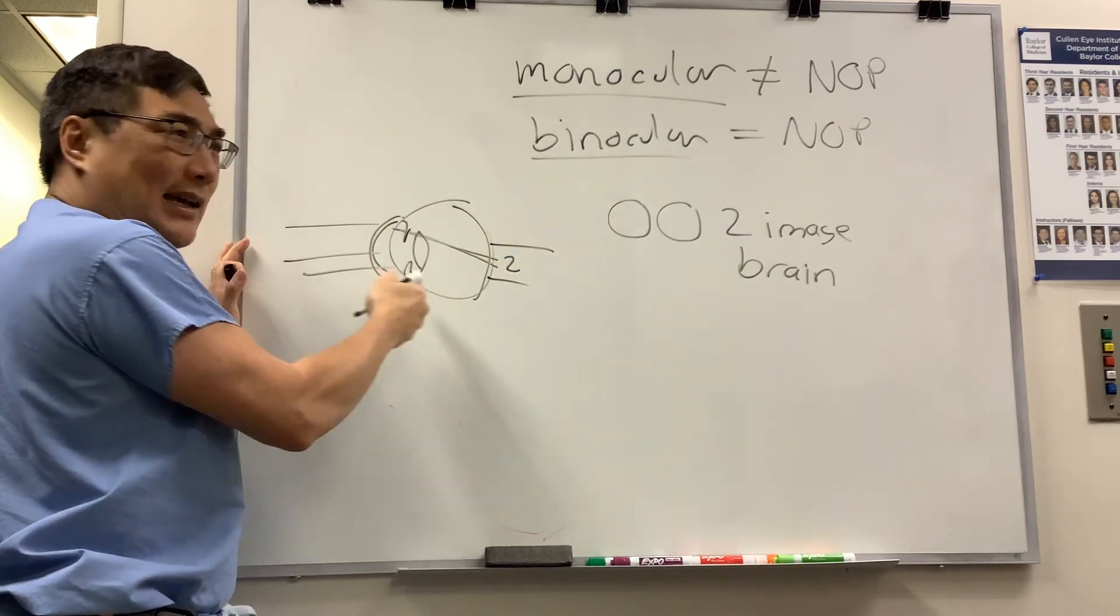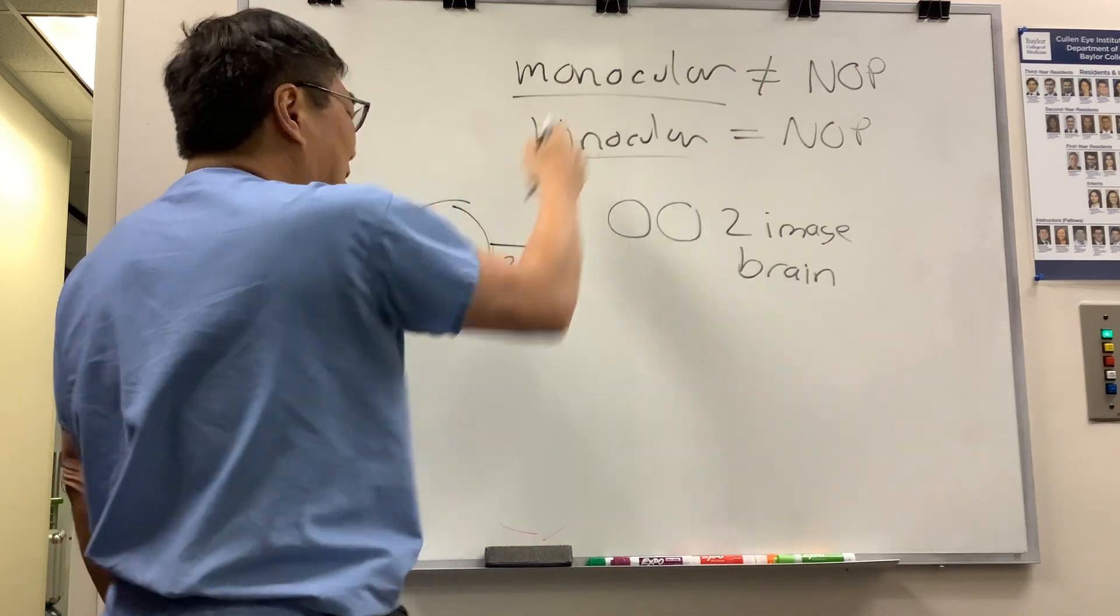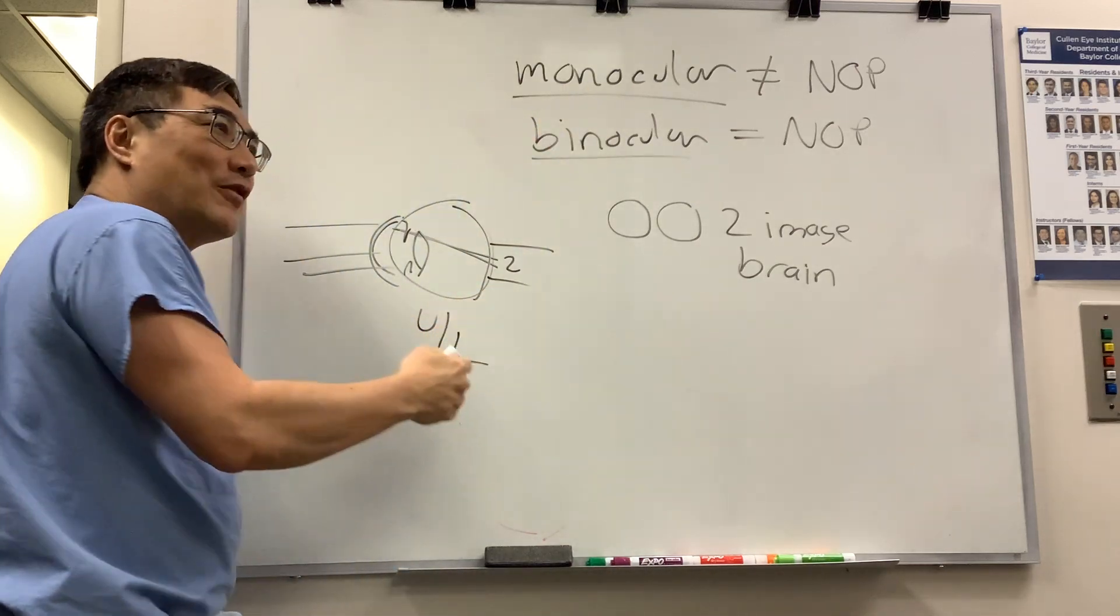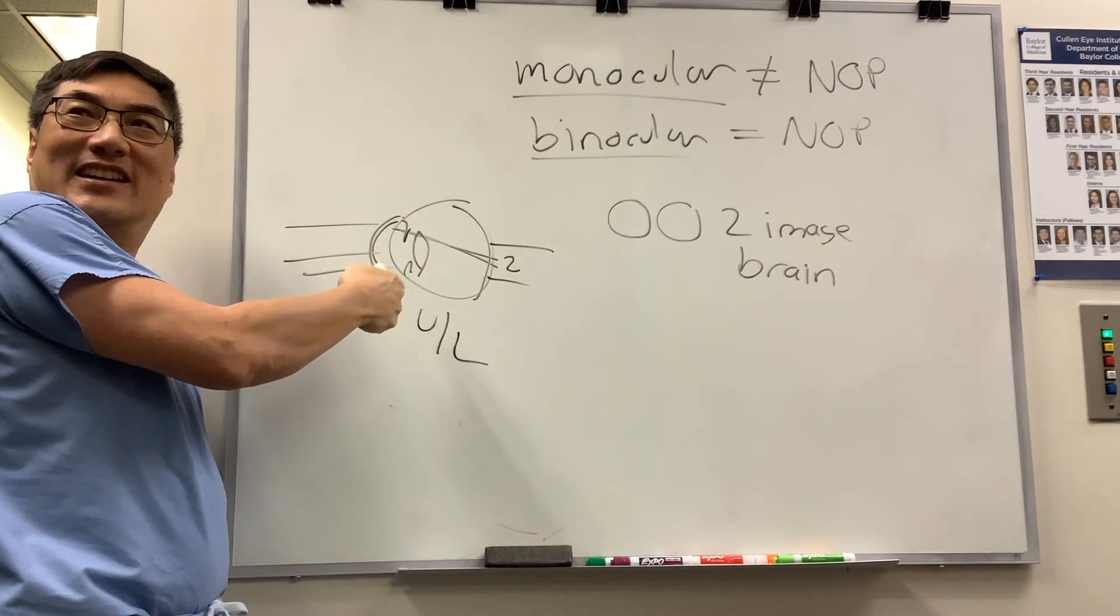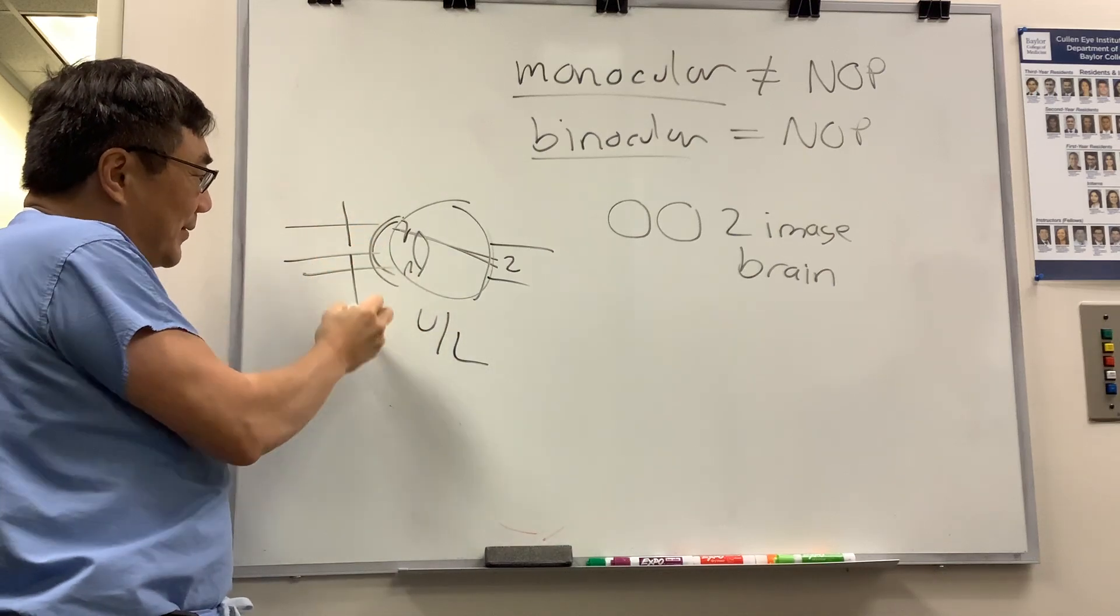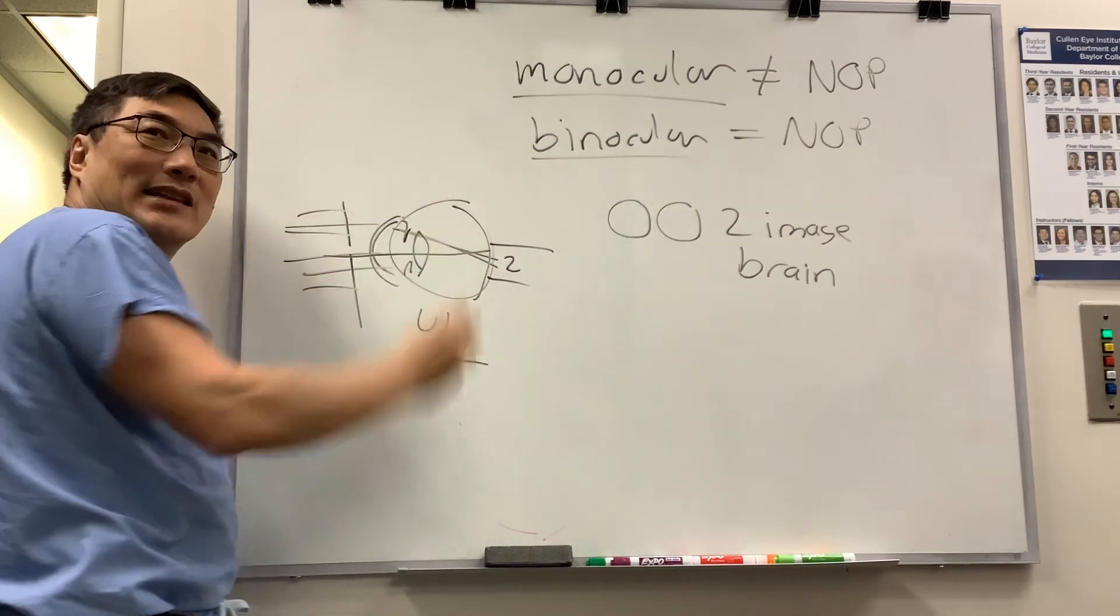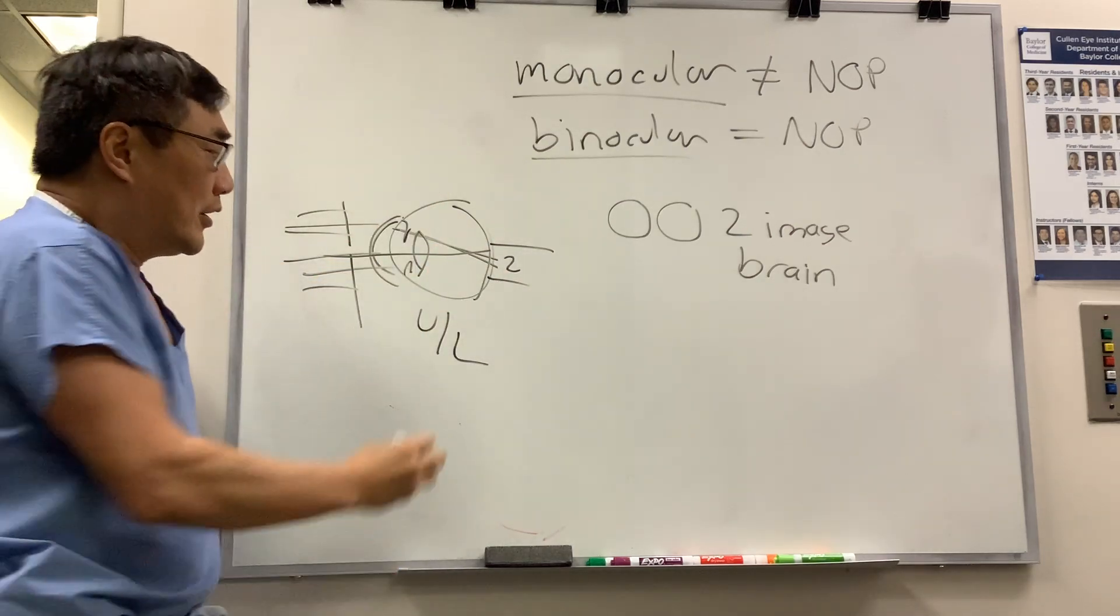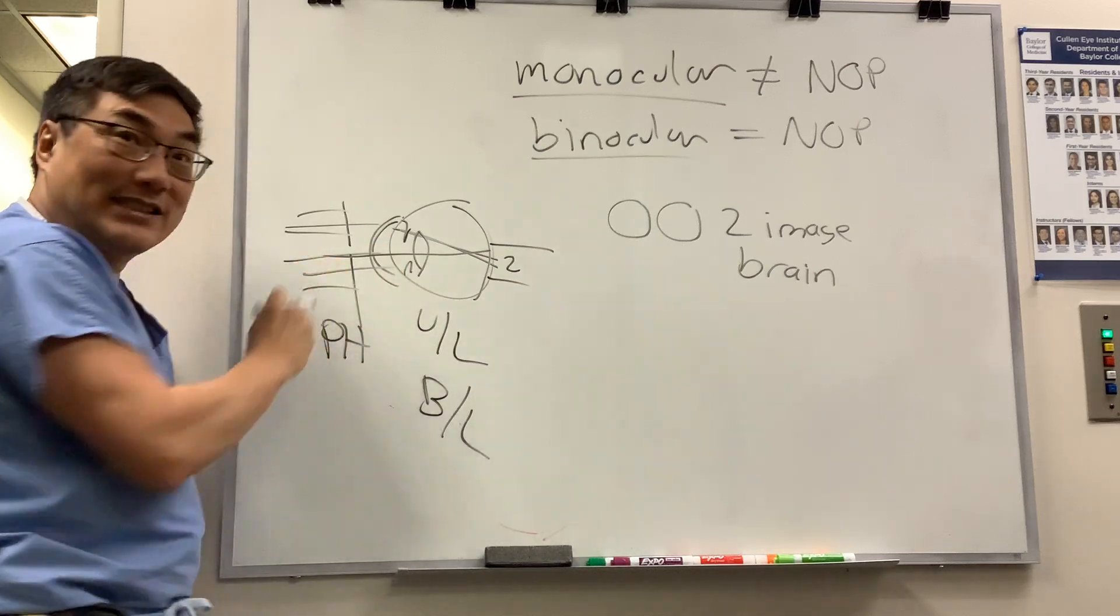However, it's only not neuro-op and monocular if it's unilateral. So if it's unilateral and monocular, that for sure is in your eye because brain things have to be both eyes. If you put a pinhole up, it'll block all the rays except for that one and eliminate the monocular diplopia. But what if it's bilateral and you put the pinhole and it doesn't go away?